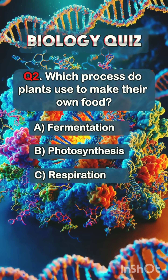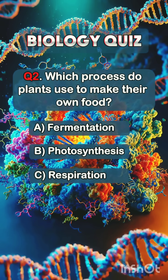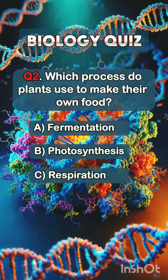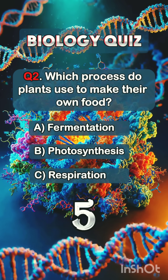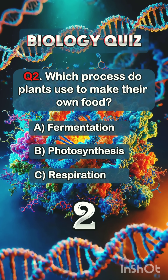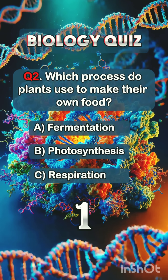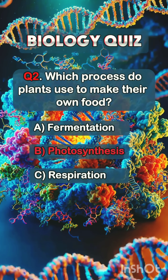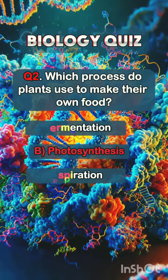Question 2. Which process do plants use to make their own food? Answer B: photosynthesis.